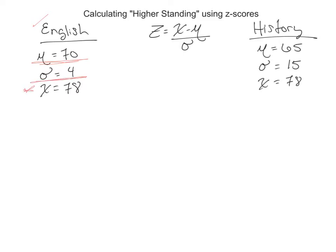The exact same score you earned in your history class. So you have 78 here also. In your history class, the mu was 68, the standard deviation of 15, so a much greater standard deviation.